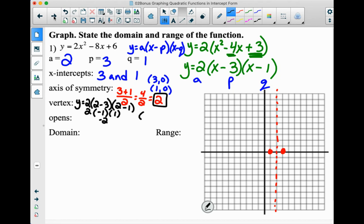So our vertex would be at (2, negative 2). And remember, we got the 2 from right up there, the axis of symmetry. So 2, negative 2 is right there.